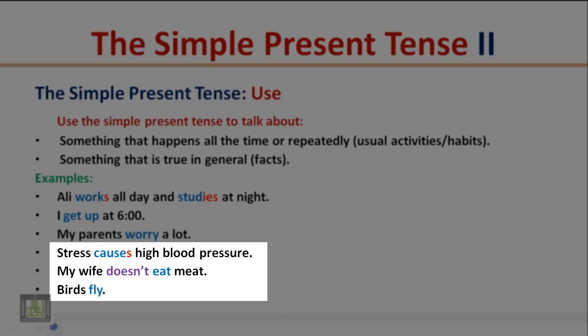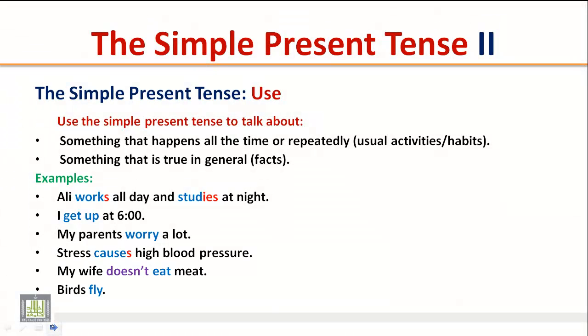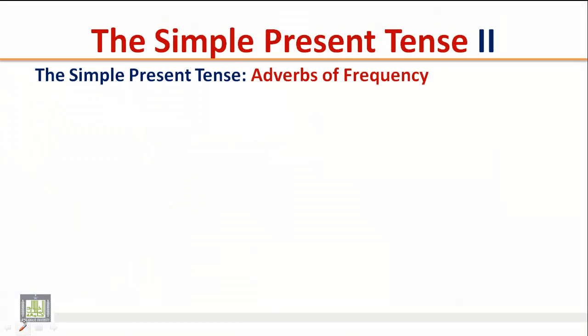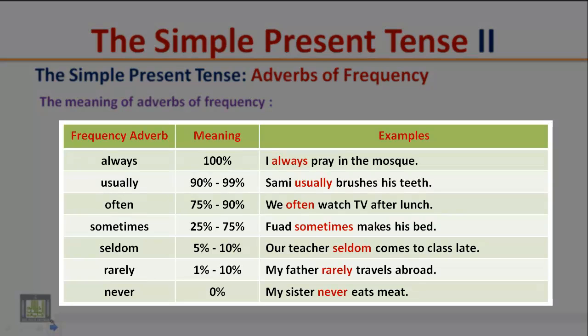The Simple Present Tense: Adverbs of Frequency. The meaning of adverbs of frequency: Always means 100 percent. I always pray in the mosque. Usually means from 90 percent to 99 percent. Sami usually brushes his teeth.